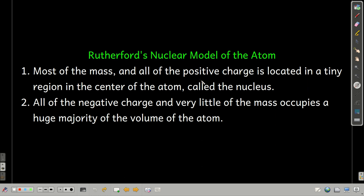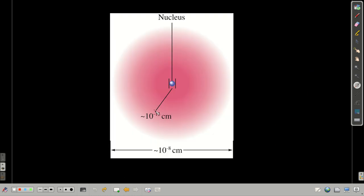So, most of the mass and all of the positive charge is located in the nucleus, which is really, really small compared to the rest of the atom. And all of the negative charge and almost no mass is outside of the nucleus, which is the vast majority of the volume of the atom is there. There's Rutherford's model.